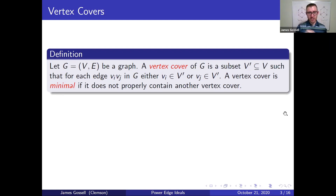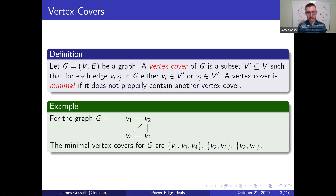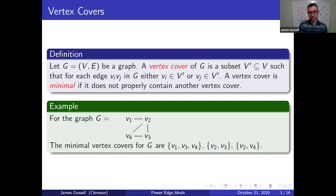Can we do even better? Is there a way to only choose three vertices? It turns out there is. I could choose this vertex, this vertex, and this vertex, and that would be the fewest vertices needed for a vertex cover. We call this a smallest vertex cover. I've also written out all three minimal vertex covers for a basic four-vertex graph, so you can verify each set is indeed a minimal vertex cover.